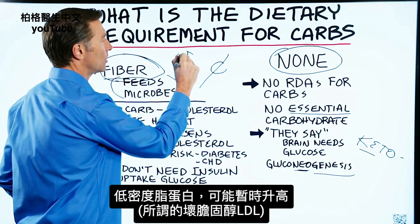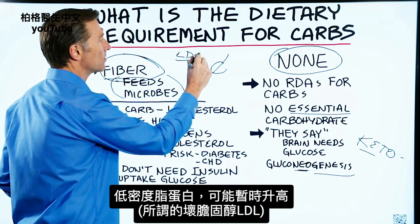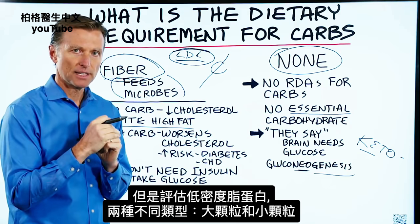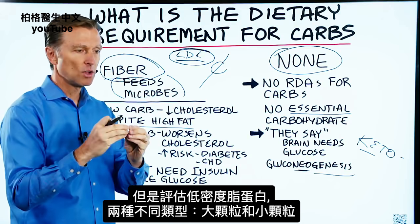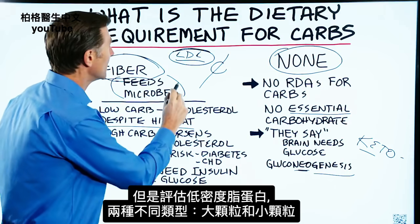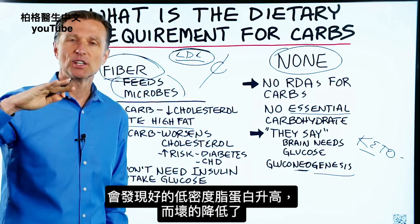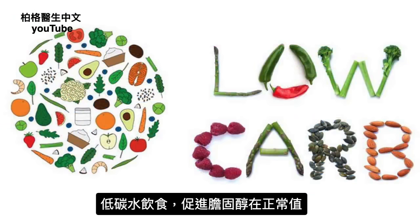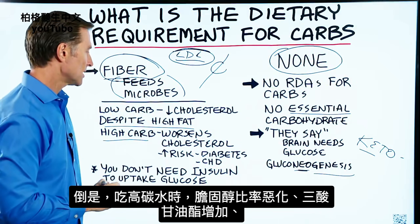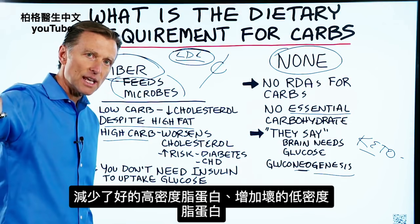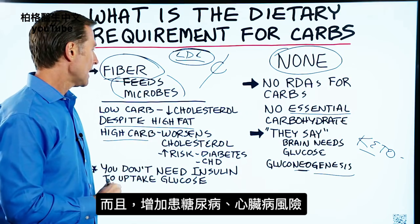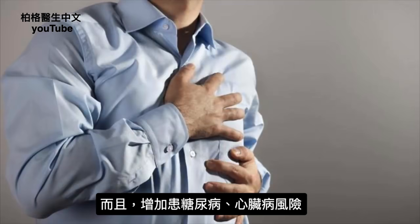Your LDL, the so-called bad cholesterol, may go up temporarily. But if you evaluate LDL for the two different types — large buoyant versus small dense — you're going to find that the good LDL is going to be high and the bad is going to be low. So a low-carb diet puts you in a really good place with cholesterol. It's when you consume a high-carb diet that you worsen your cholesterol ratios, increase triglycerides, decrease HDL, increase the really bad version of LDL, and also increase your risk of diabetes and heart problems.